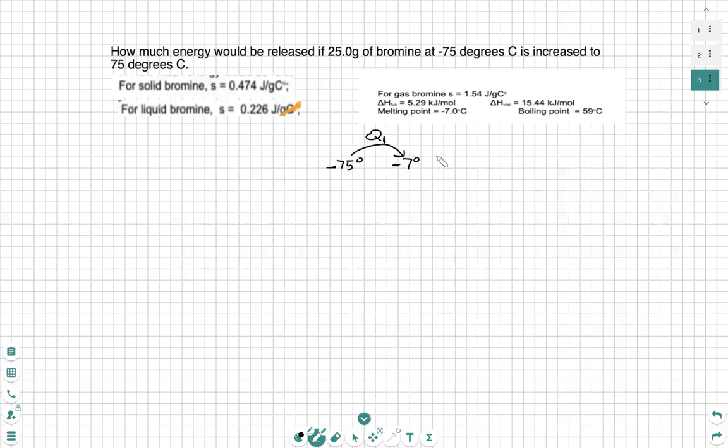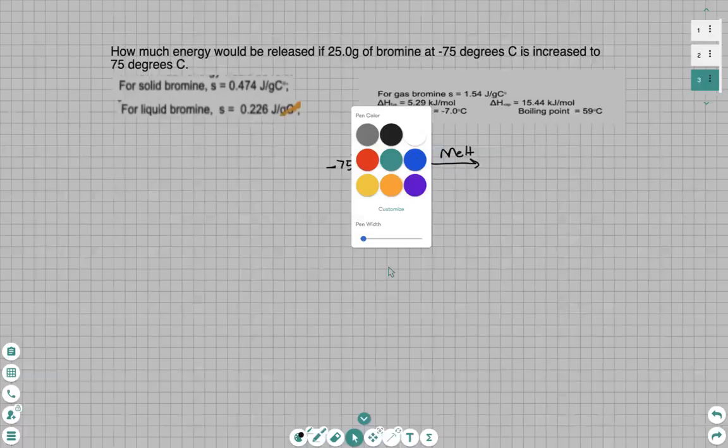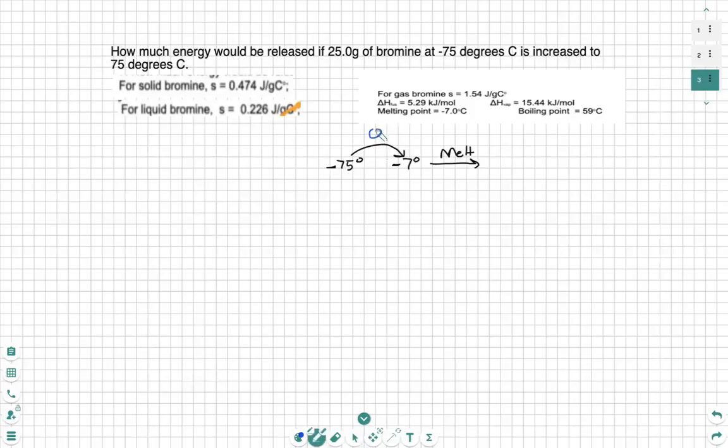Next, at negative 7 degrees Celsius, we are going to be melting. That is Q2. And when it melts, we do not change temperatures. That's just the energy of phase changing. So that's Q2. I'm going to write the Qs with different color. So this is Q1. This is Q2.